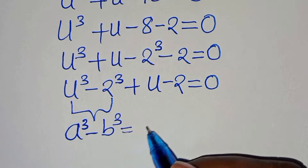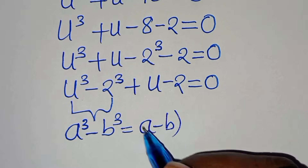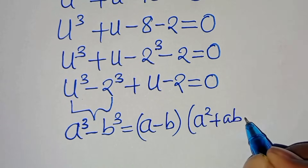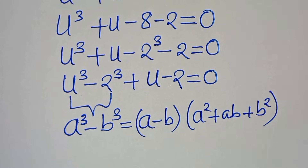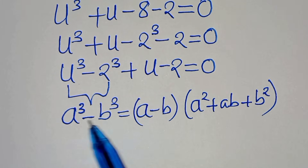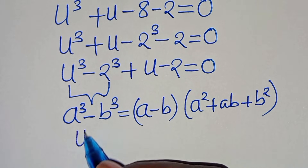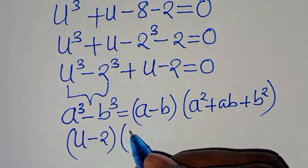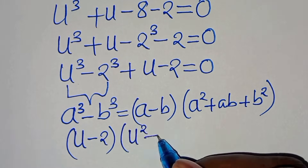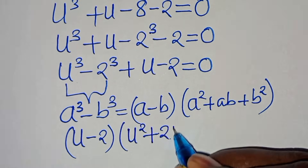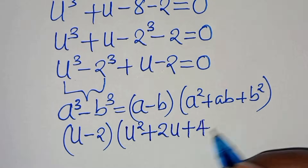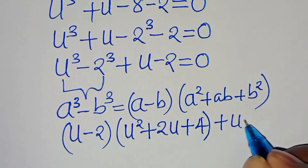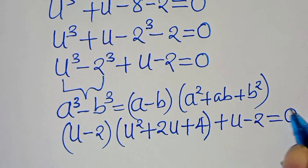This can be expressed as a minus b, times the quantity a squared plus a times b plus b to the power of 2. Applying this identity, we have u minus 2, times the parenthesis u squared plus 2u plus 4, close parenthesis, then plus u minus 2, and this is equal to 0.